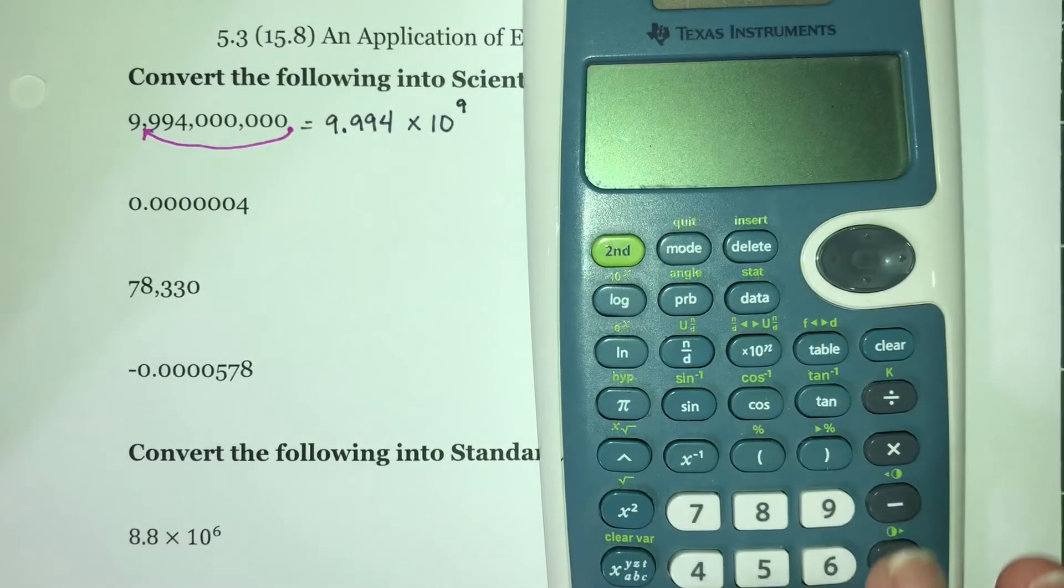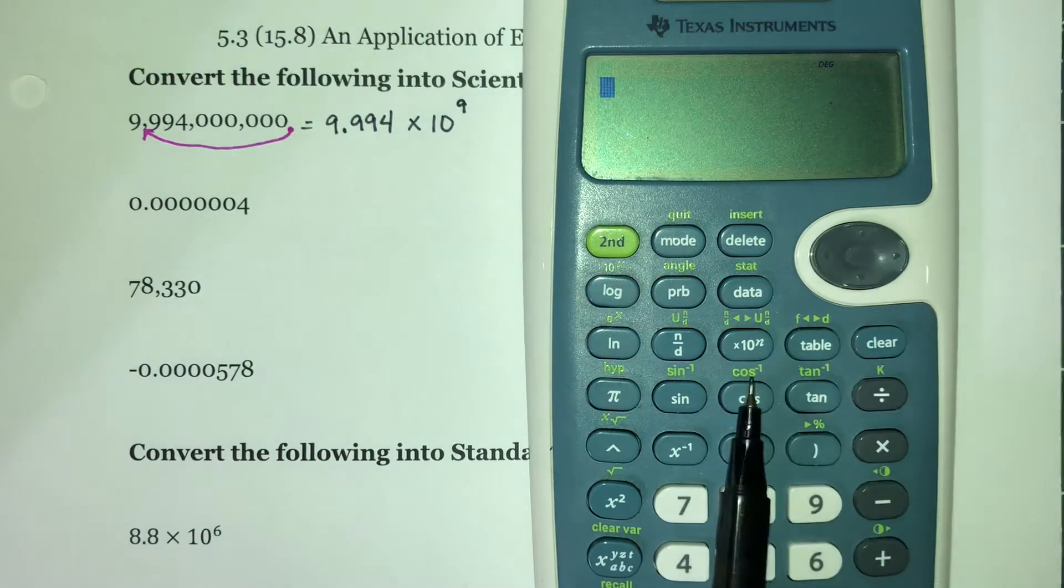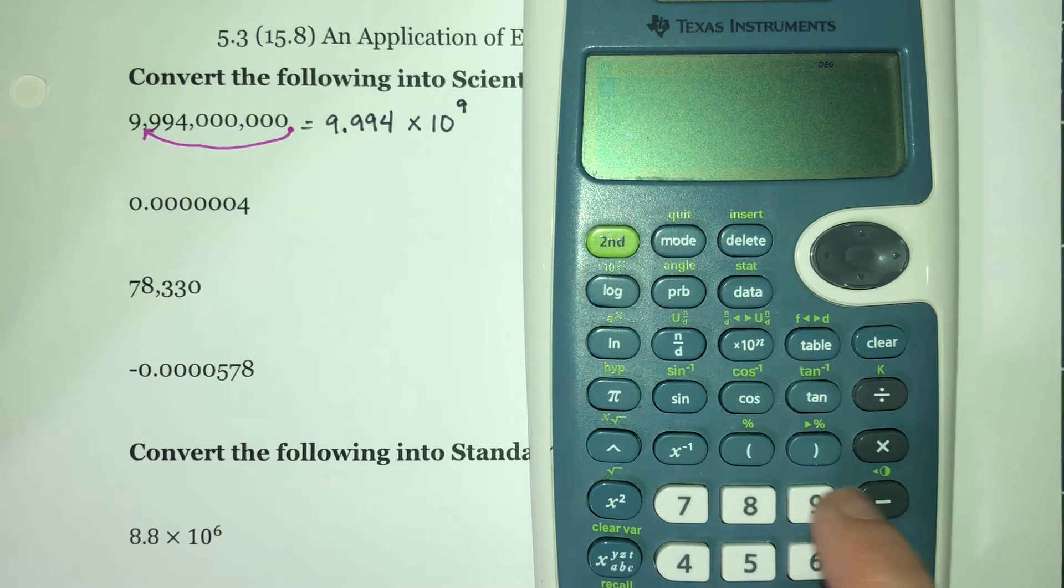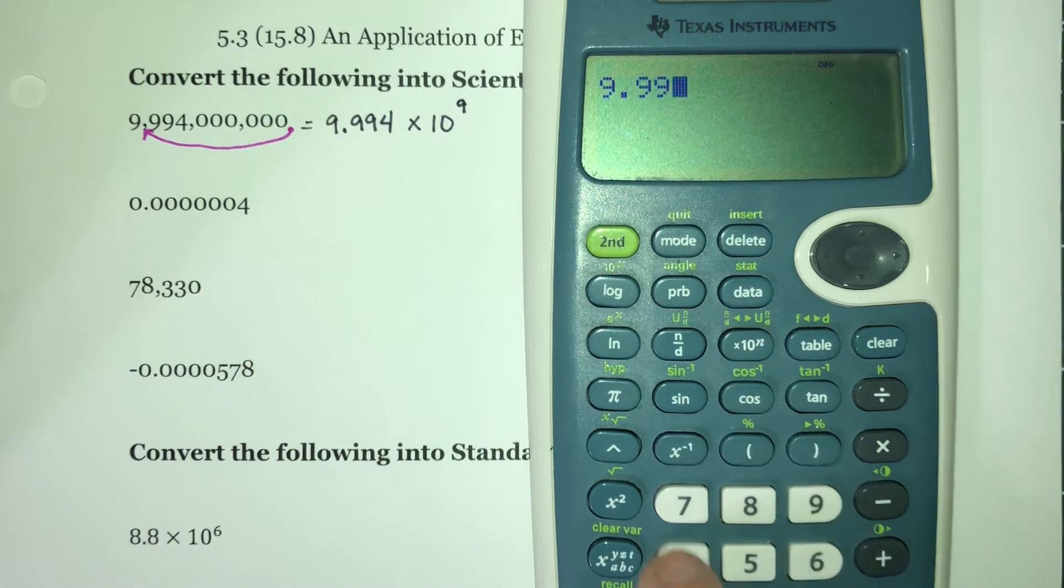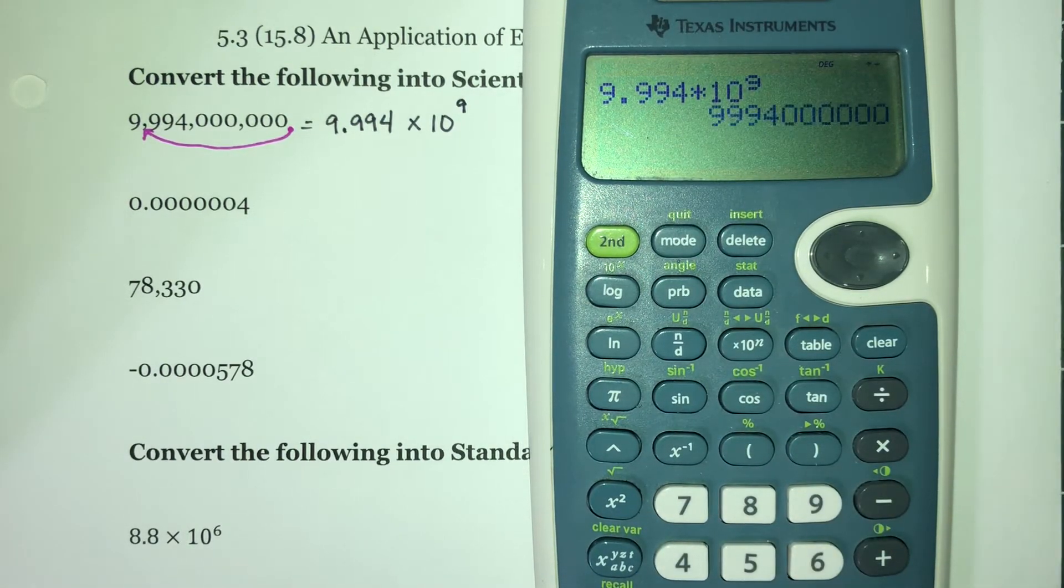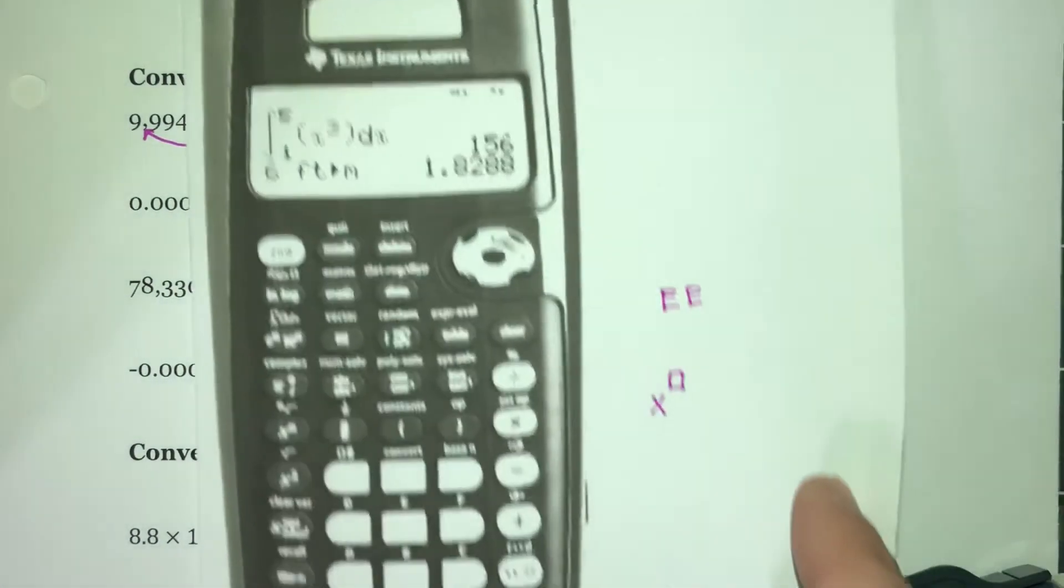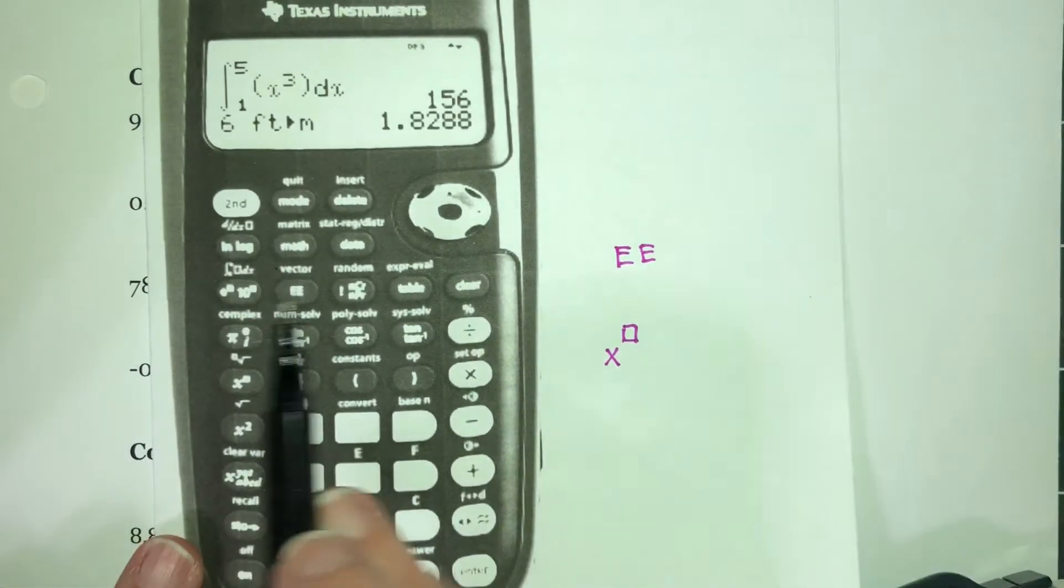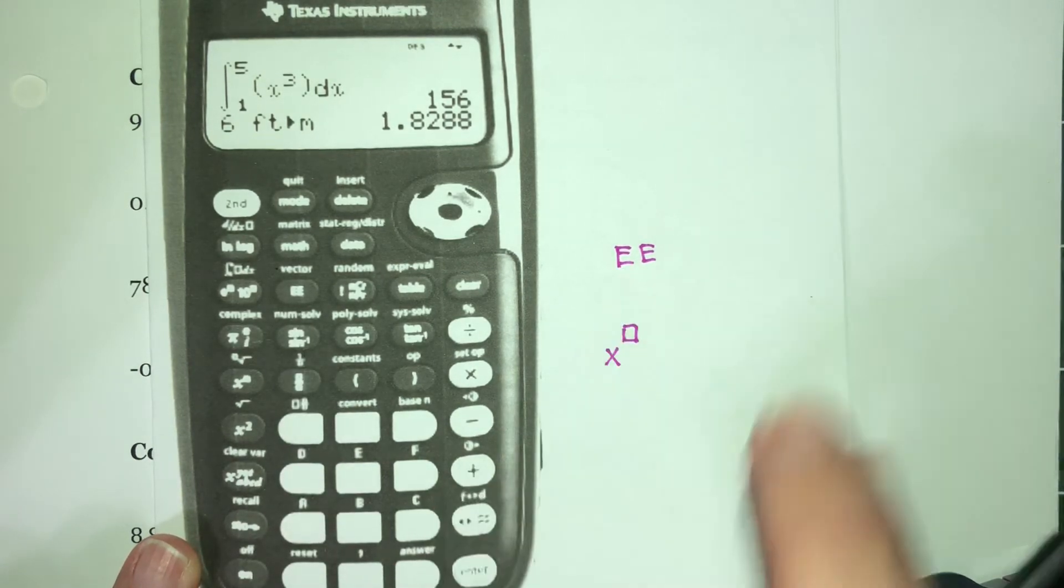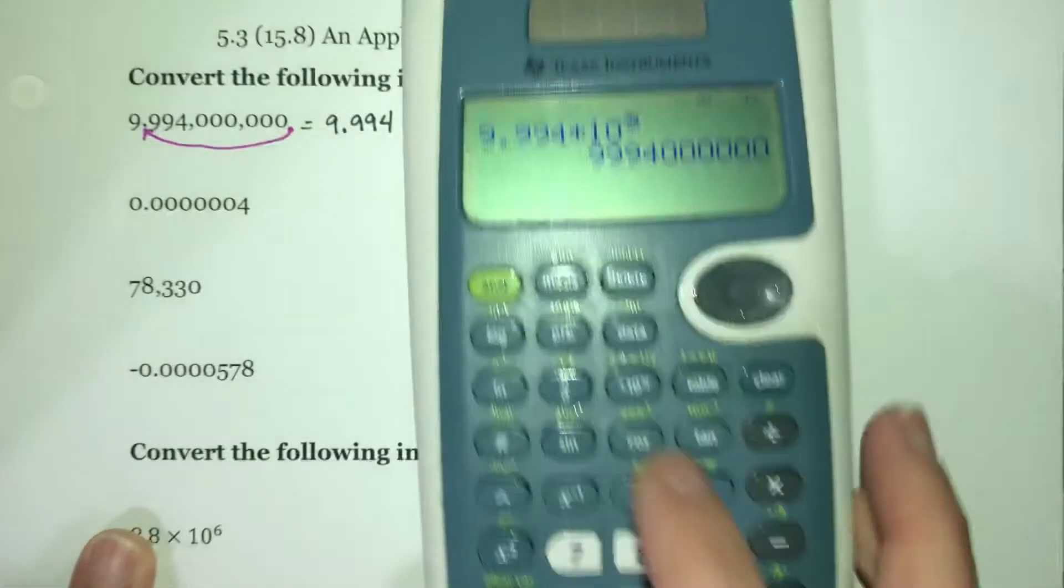Now your calculators have, right here on this calculator, times 10 to the n. I could enter 9.994, hit that button, it's going to go times 10 to the, and I put in 9 and I can check to see that it's correct. On the calculators we have in the classroom, it's really hard to see, but right here there's an EE button, and that does exactly what that times 10 to the n button did here. It would work exactly the same way, so you can use that to check.